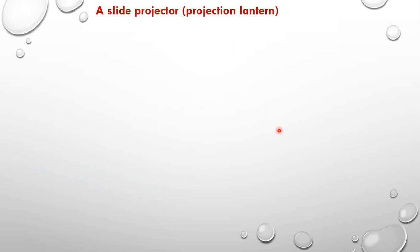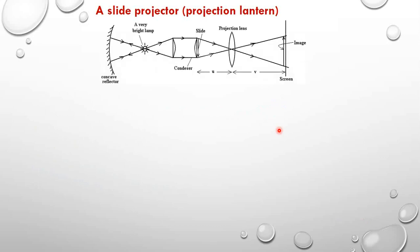The slide projector consists of a concave reflector, a strong source of light, a condenser which consists of two plano-convex lenses, a slide placed here, and then we also have what you call a projection lens and a screen.